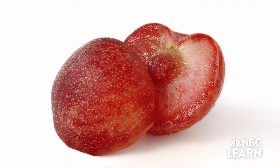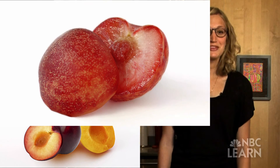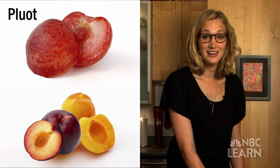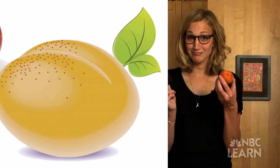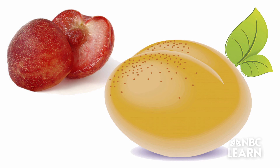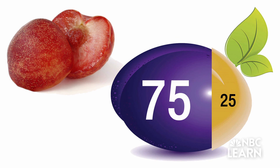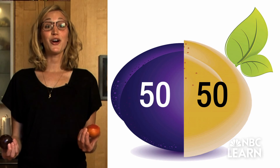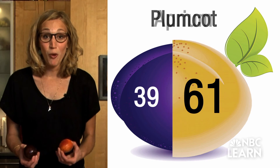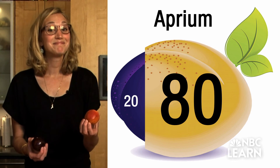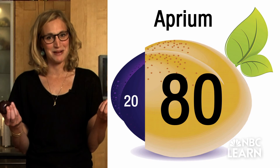Here's a hint — pay attention to their names. What do you think this is? The pluot is a cross between a plum and an apricot. Pluots are actually more like 75% plum and 25% apricot. 50-50 hybrids are called plumcots. And fruits that are more on the apricot side? You guessed it — aprium.